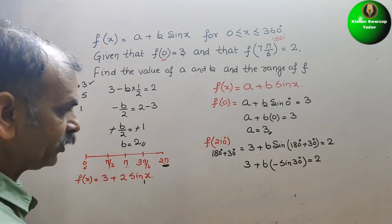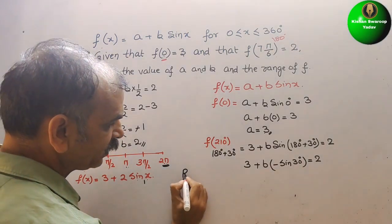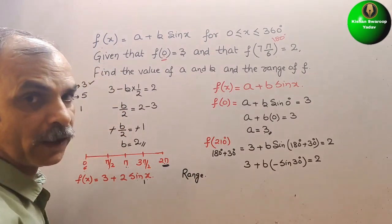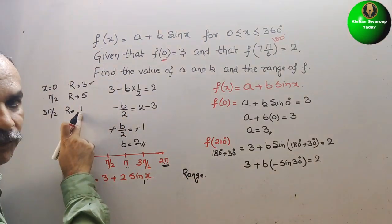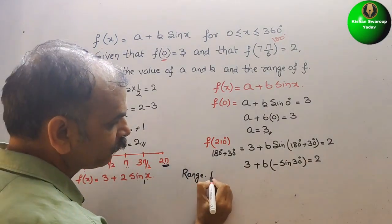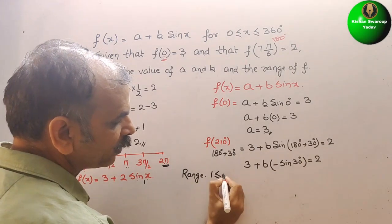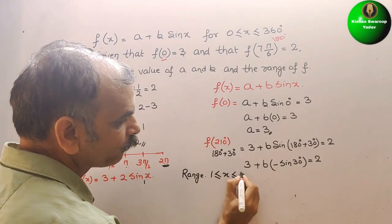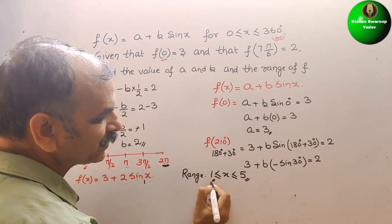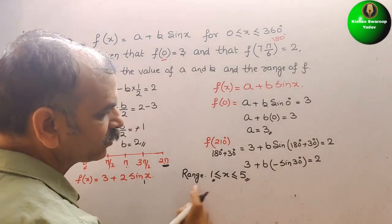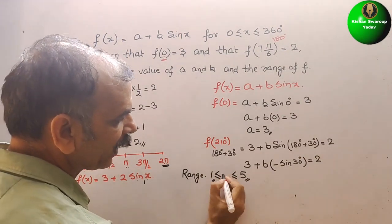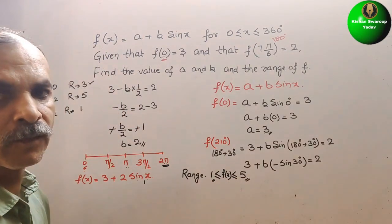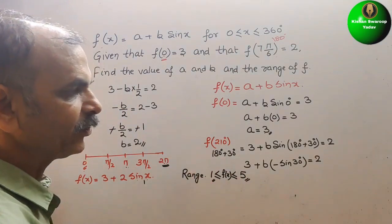So the range is: the minimum value is 1 and the maximum value is 5. Therefore, range is 1 less than or equal to f(x) less than or equal to 5. This is the range of f.